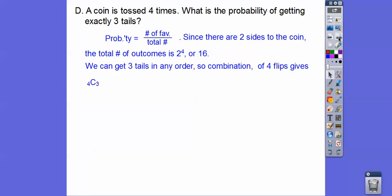We can get three tails in any order. So it's a combination of four flips. Since we're doing four flips, then we get 4 choose 3. This is our favorable outcomes. This is our top number we're getting. We know the bottom number is 16. That's the total. So this is 4 times 3 factorial, so that's just plain old 4. So we're going to get 4 over 16, which reduces to 1 over 4.